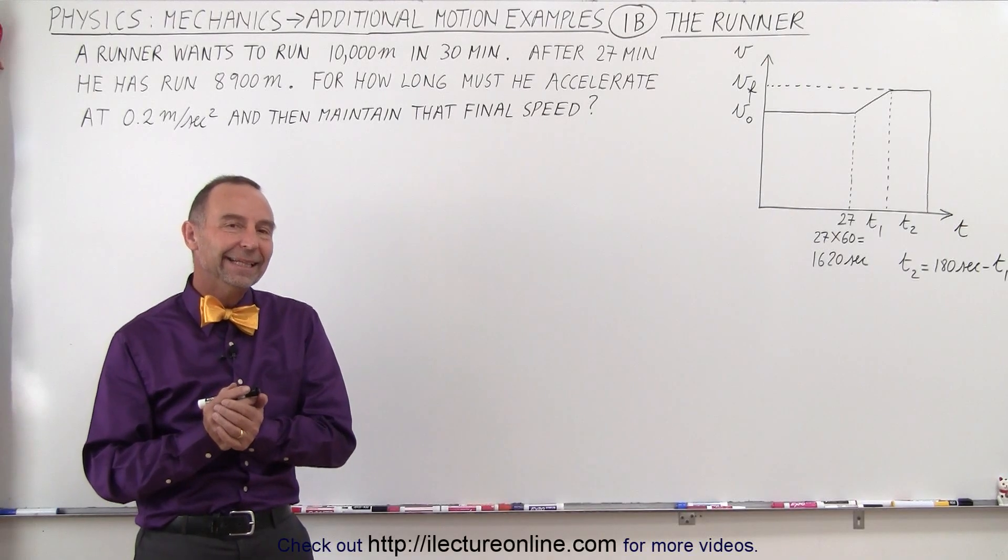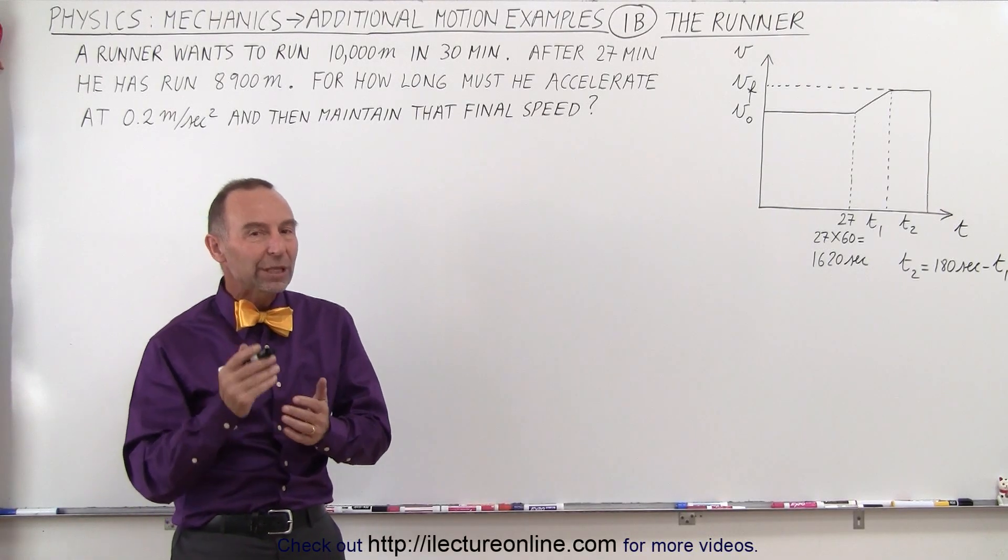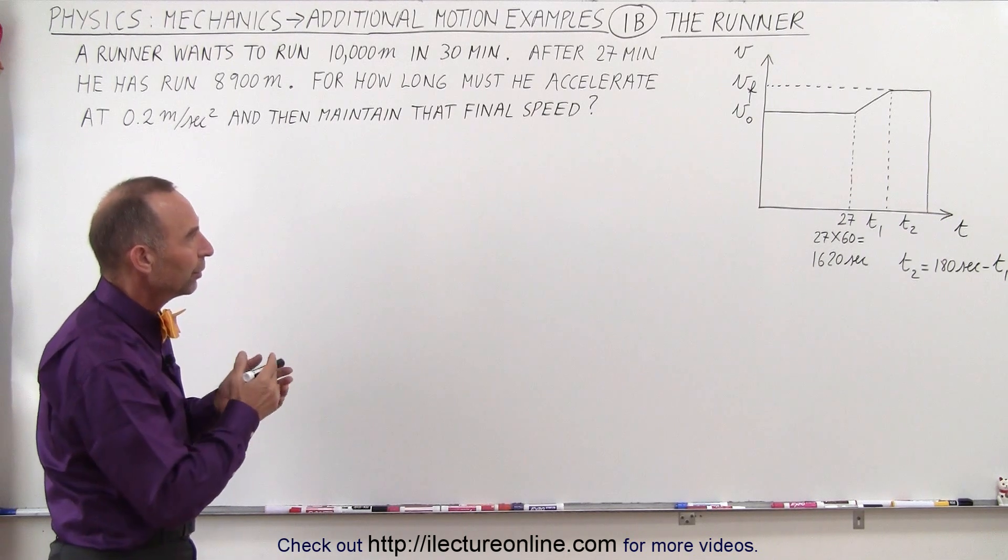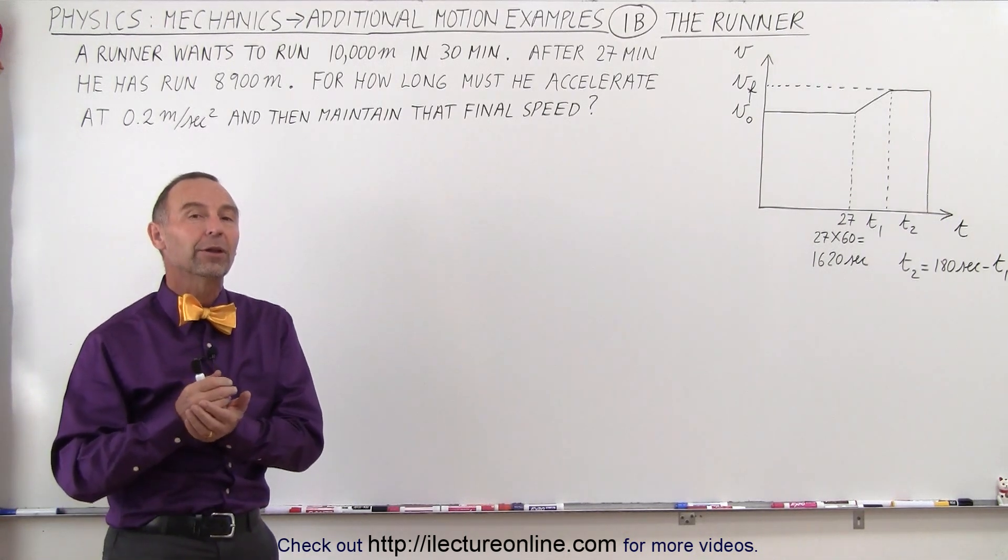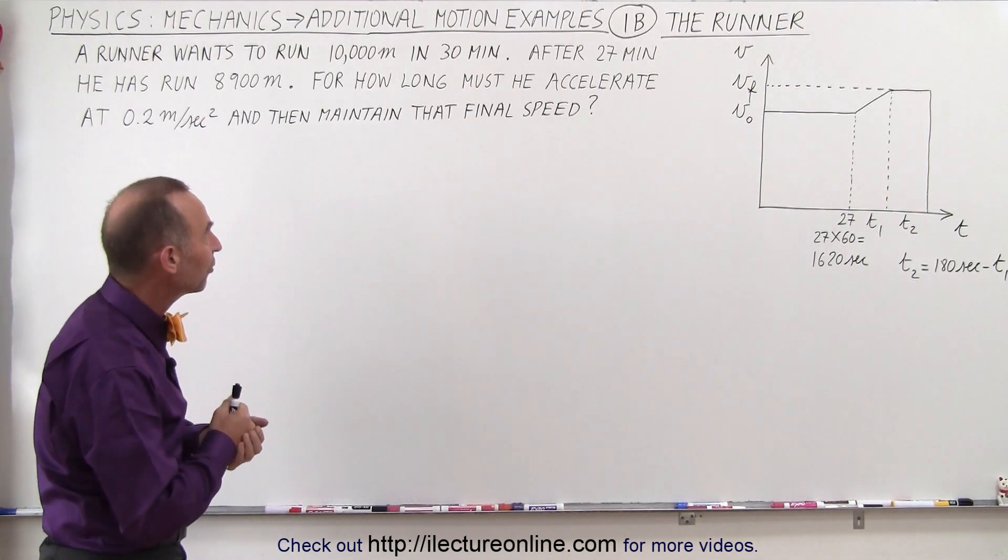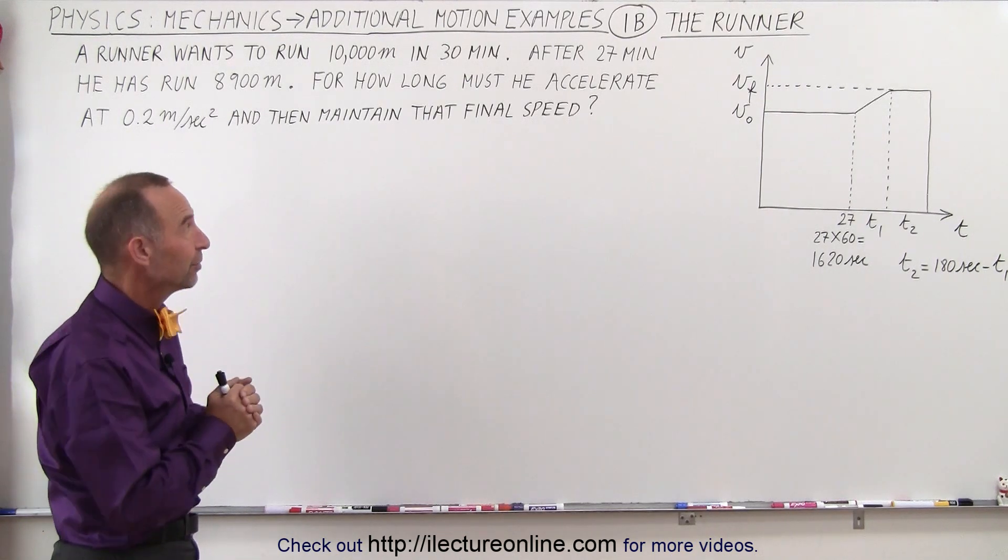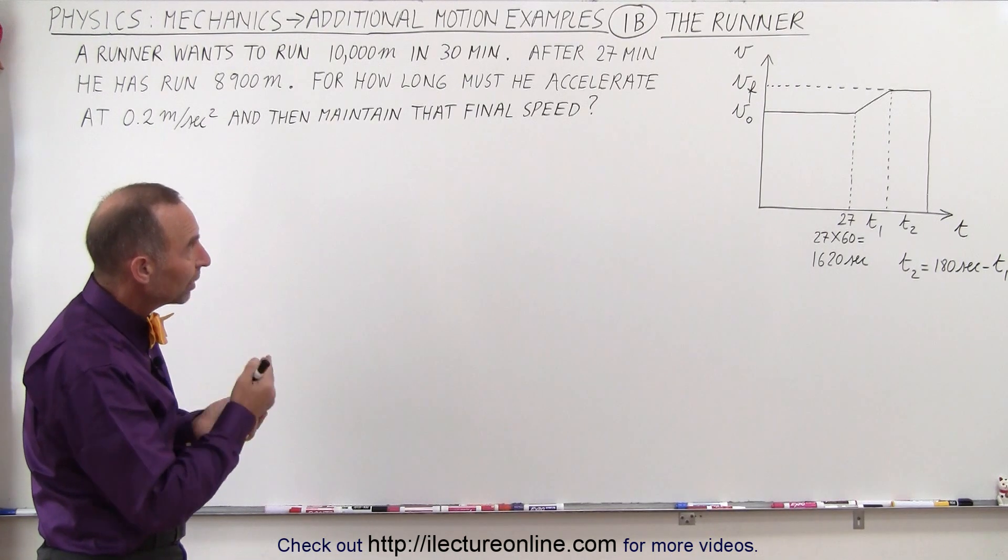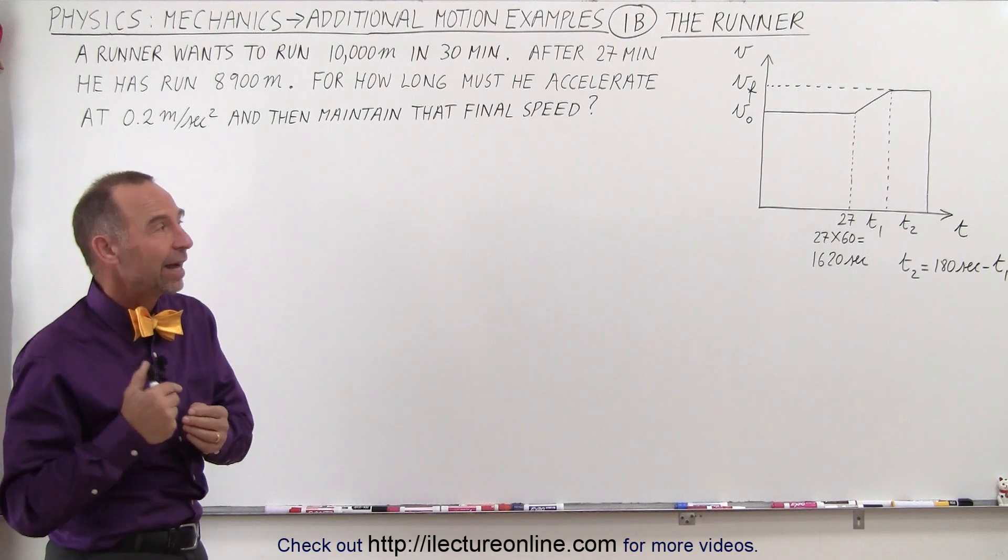Welcome to Electroline. In this example we're going to redo the problem with the runner where the runner was trying to run 10 kilometers, 10,000 meters in 30 minutes, which by the way is quite a feat to do. And after 27 minutes he realizes he's behind schedule.